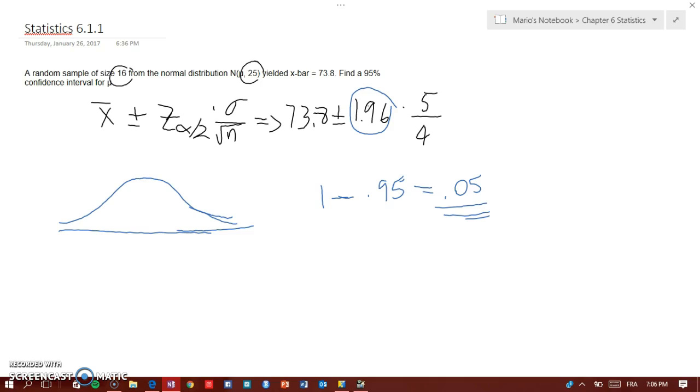So it's basically 1 minus alpha here, 1 minus alpha, which is 0.05. Then 0.05 divided by 2 is equal to 0.025.